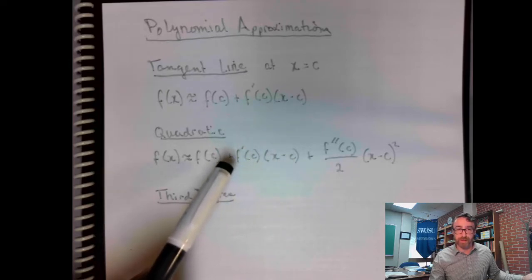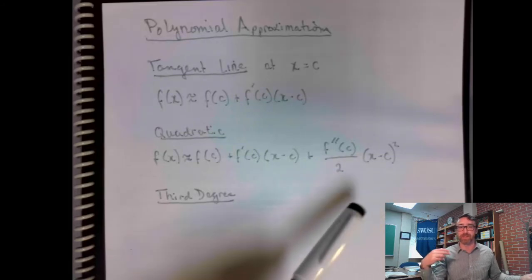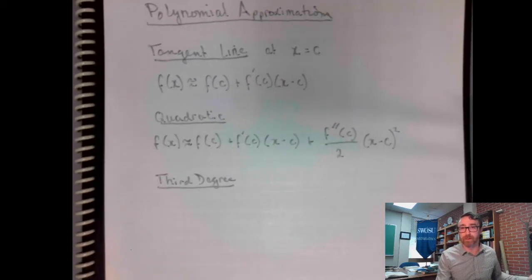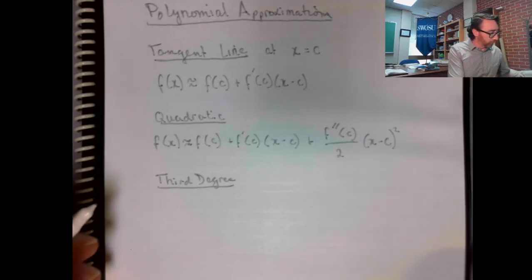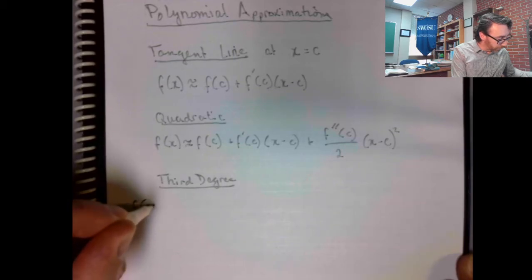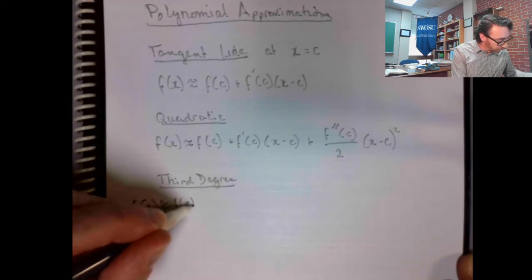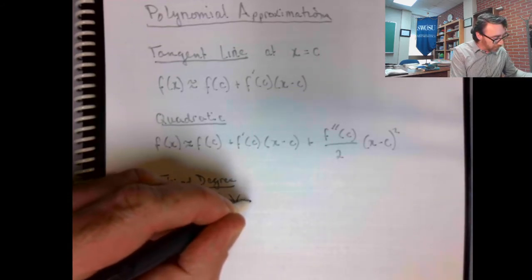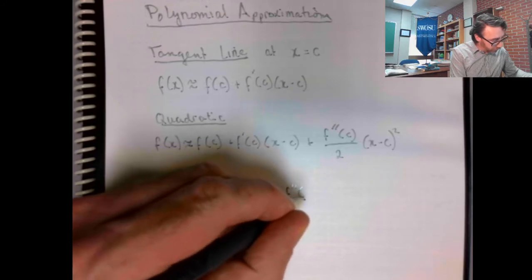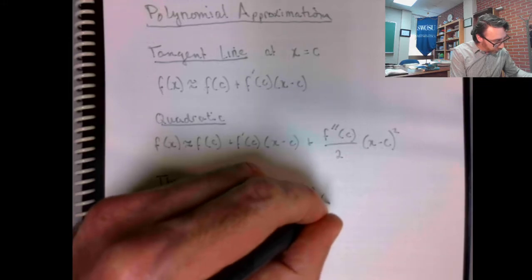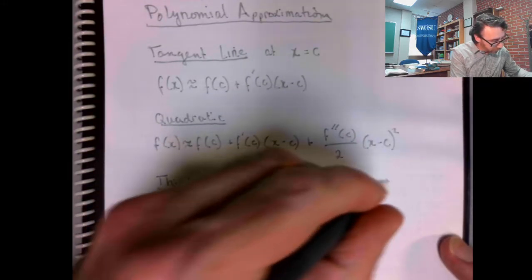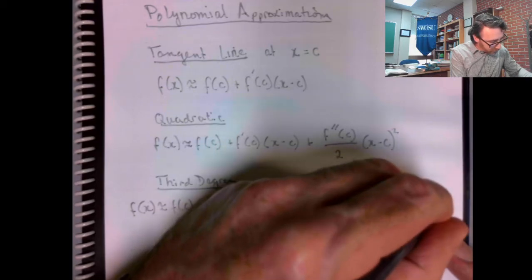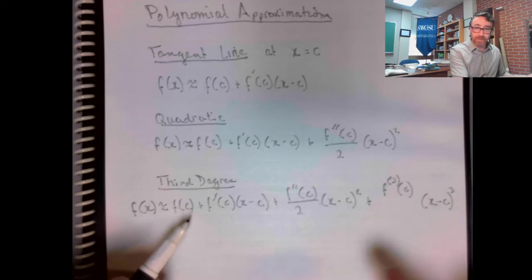Notice this does not have any x minus c, this has x minus c to the first, this has x minus c to the second. So hopefully the pattern here is becoming clear. If we were to do a third degree approximation, we would evaluate the function, evaluate the derivative times x minus c, second derivative over 2, x minus c squared, third derivative times x minus c cubed, that pattern's pretty easy to see, I hope.